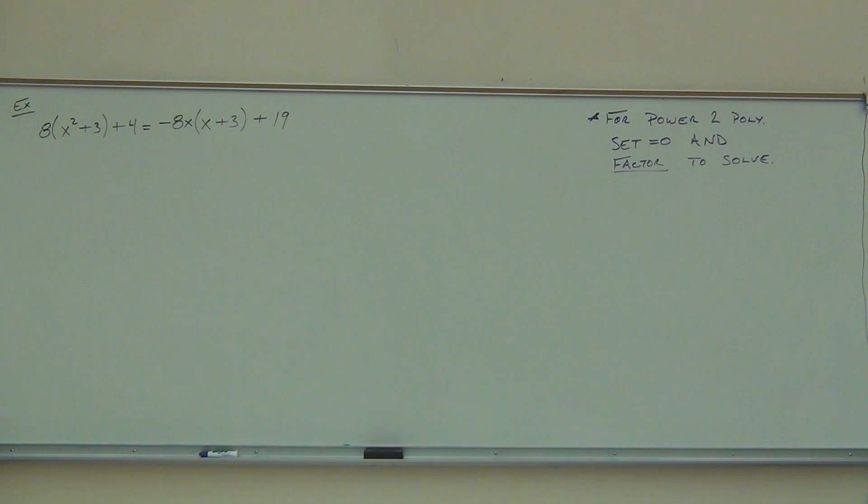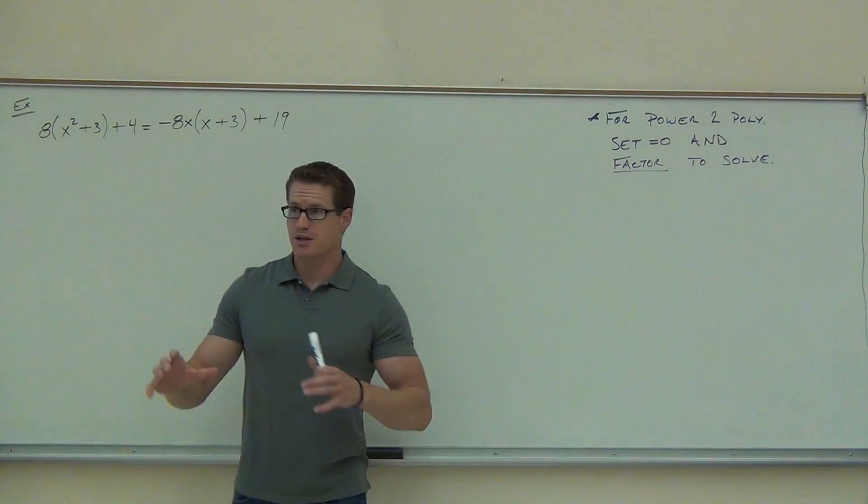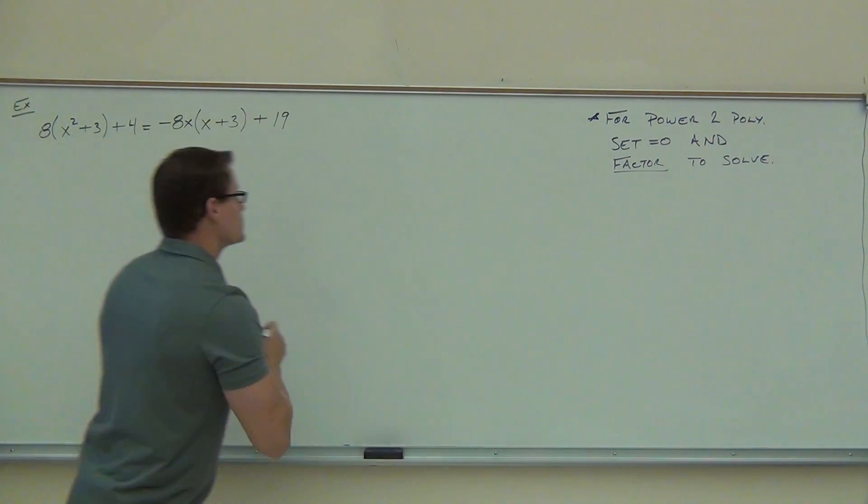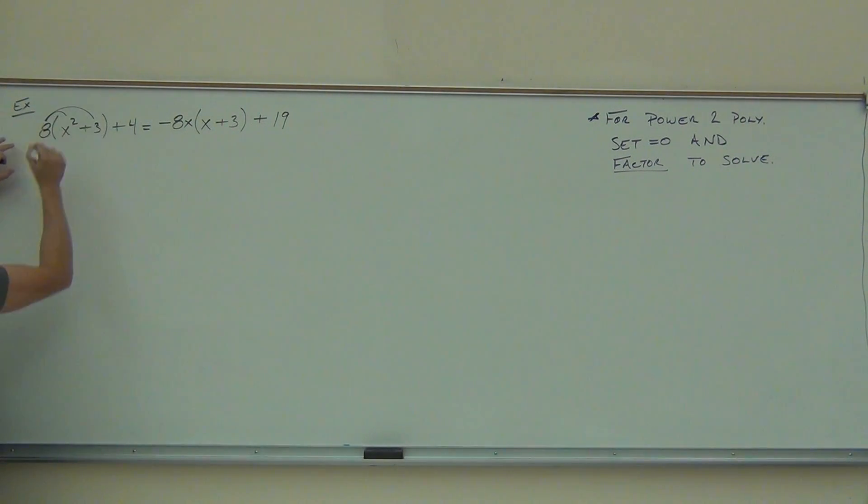We're going to get started here. Of course, the first thing that we want to do is we want to distribute because we're going to simplify both sides. So after distribution, we should hopefully have 8x² + 24 + 4. Do you have the left side?